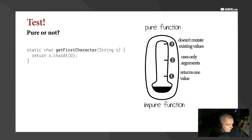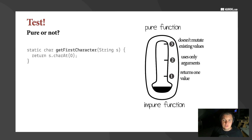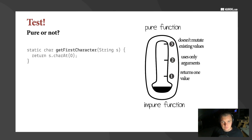The final test function is getFirstCharacter, using charAt. It's a simple function but not a pure one — and this surprises many people — because it doesn't always return one value. Sometimes it doesn't return any value at all, especially when called with an empty string, because it will throw an exception rather than return a value. So this is also not a pure function.